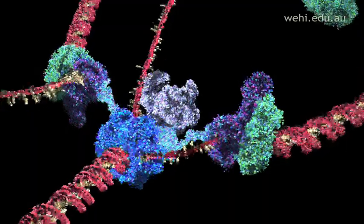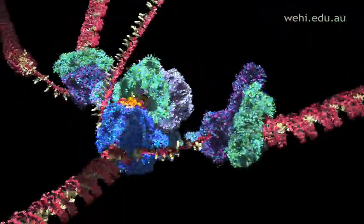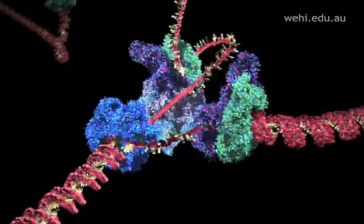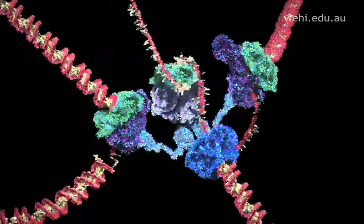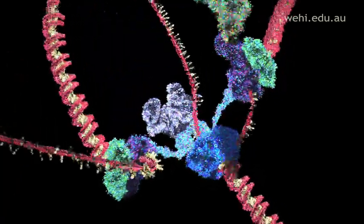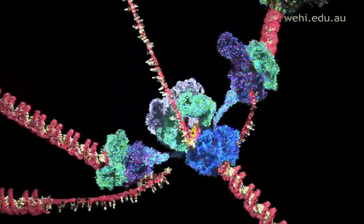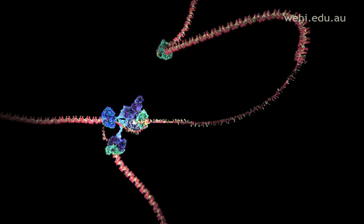One strand is copied continuously and can be seen spooling off to the right. Things are not so simple for the other strand because it must be copied backwards. It is drawn out repeatedly in loops and copied one section at a time.